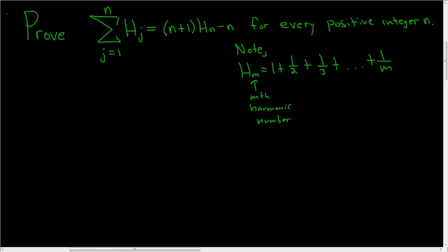We have to prove a statement for harmonic numbers. H sub m is called the m-th harmonic number, equal to the sum shown. For example, h sub 1 equals 1, h sub 2 equals 1 plus 1/2, etc.